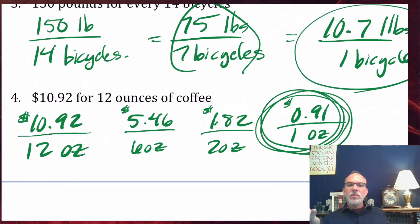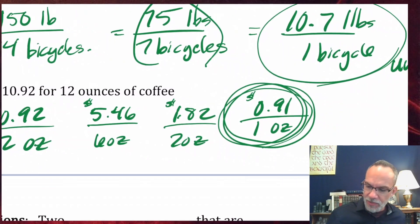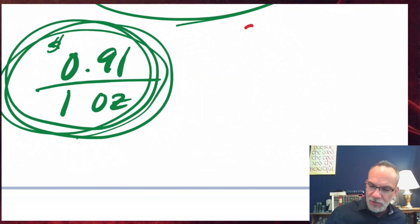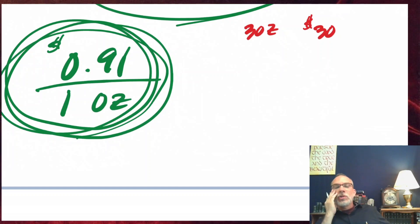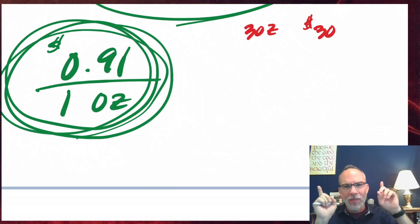The unit rate: $10.92 divided by 12 equals $0.91 per ounce. That's actually helpful because it tells you the price for a single unit — one ounce of coffee. If they offered a family-size 30-ounce bag at $30, which would be the better buy? You'd want to know which gives you more coffee for the same money.